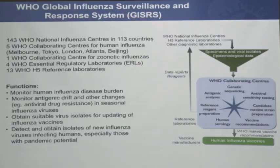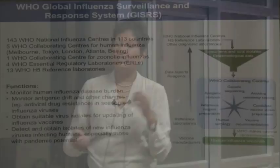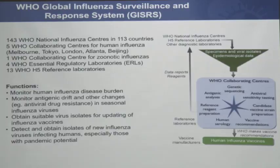These 143 centers report their information and send their viruses to five WHO collaborating centers and some essential regulatory labs. Together we characterize those viruses. The key thing we're looking for is whether the virus is different from what was circulating last year — if any country has a vaccine program, we need to know whether the vaccine should be updated. We also look to see whether viruses have become resistant to antiviral drugs, and we look for any new infections from animal sources that might pose a pandemic threat.